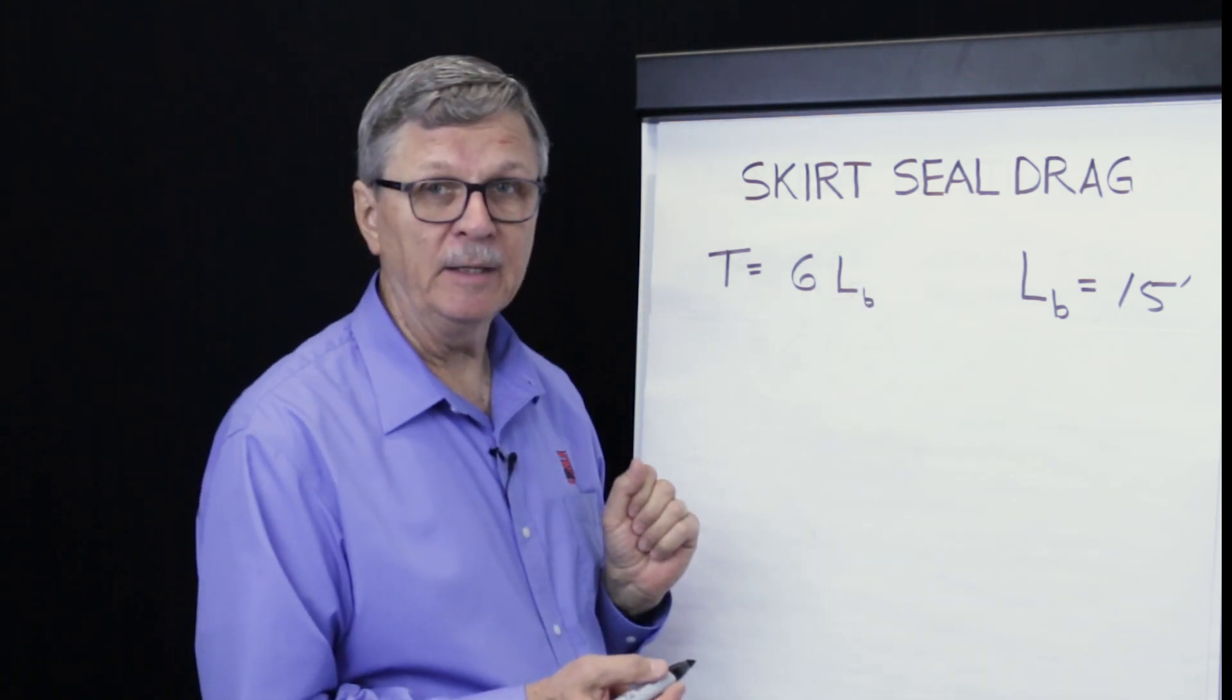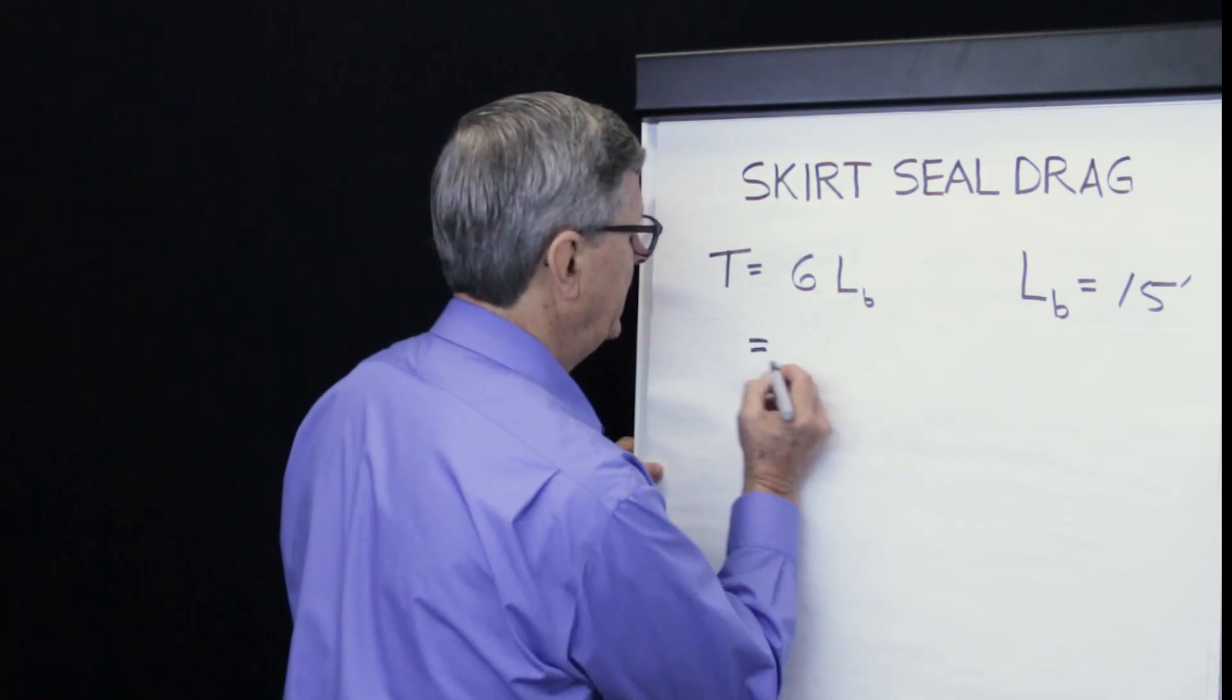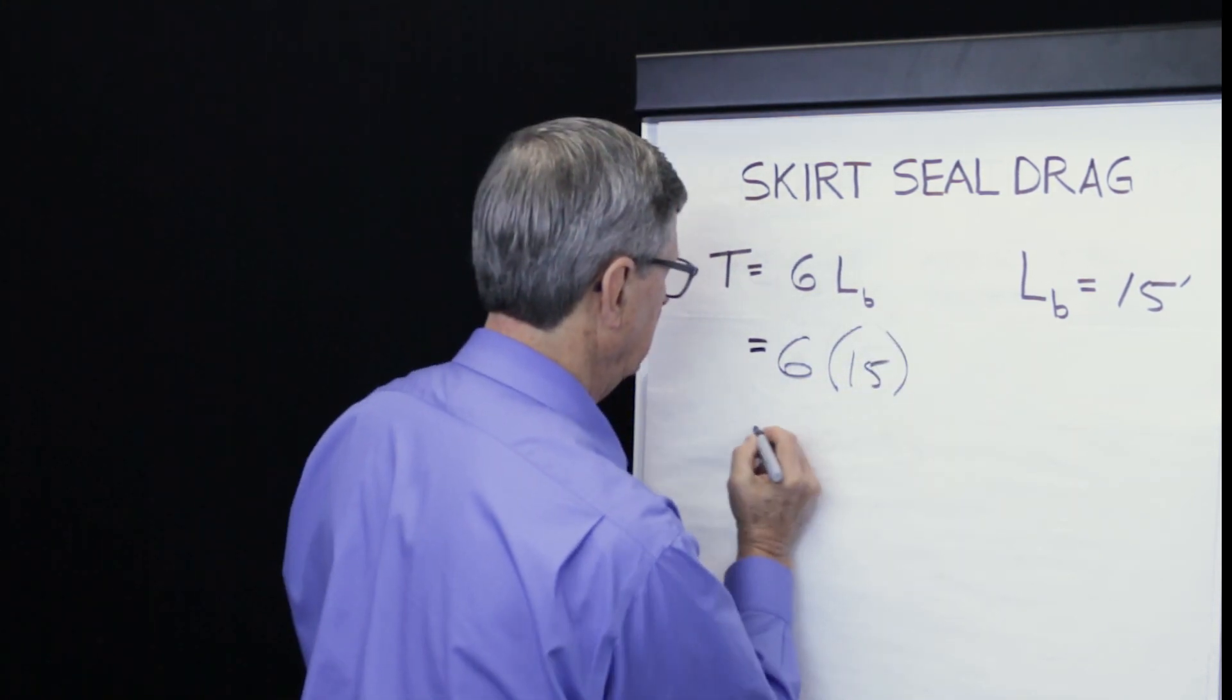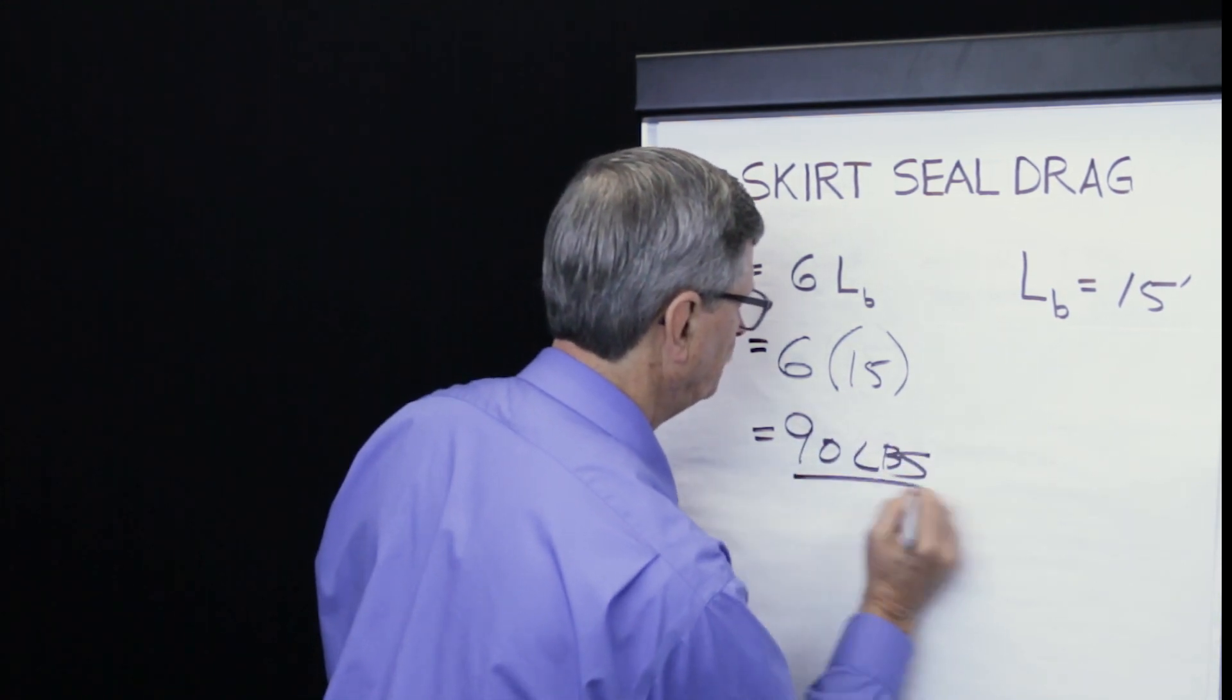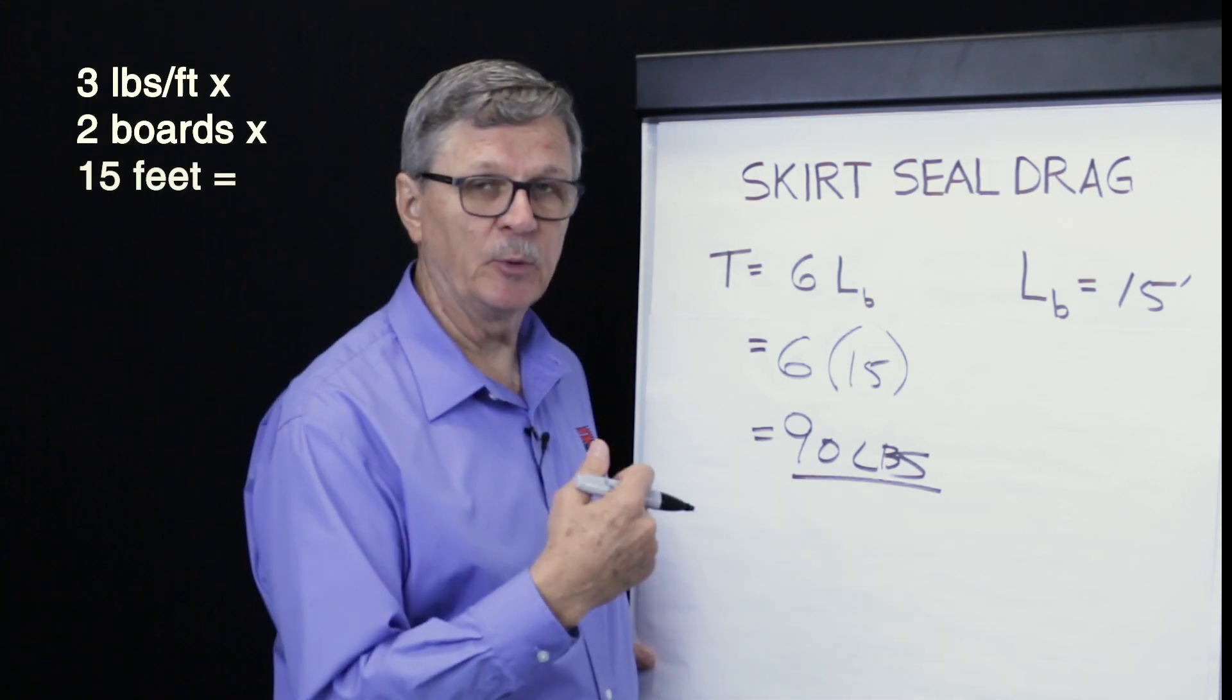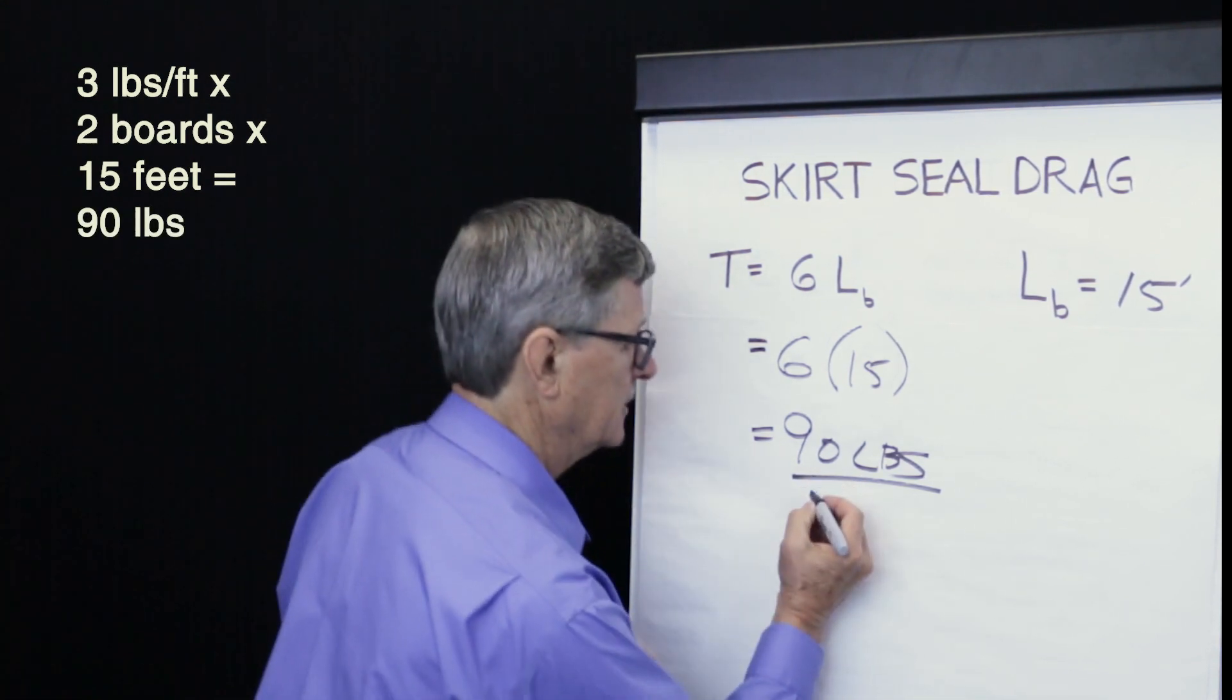Looking at our example of the 15 foot skirt zone, seal drag simply becomes 6 times 15 or 90 pounds. That's 3 pounds per foot of board times 2 boards times a board length of 15 feet. 90 pounds of seal drag.